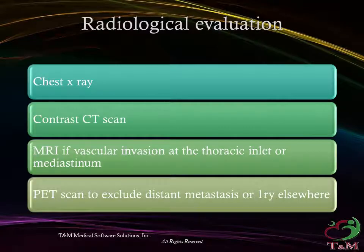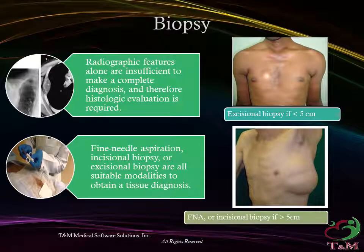Radiological evaluation includes chest X-ray, contrast CT scan, and MRI if vascular invasion or soft tissue invasion is suspected, particularly at the thoracic inlet or the mediastinum. Positron emission tomography is used to exclude distant metastasis or a primary tumor elsewhere. Radiographic features alone are insufficient to make a complete diagnosis, and therefore histologic evaluation is required.